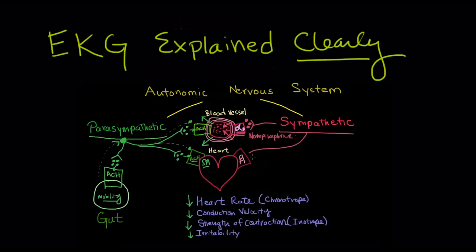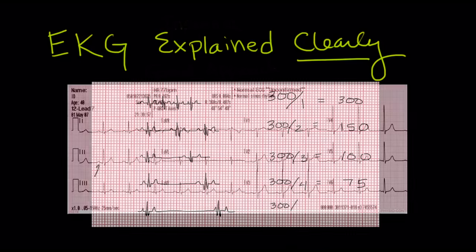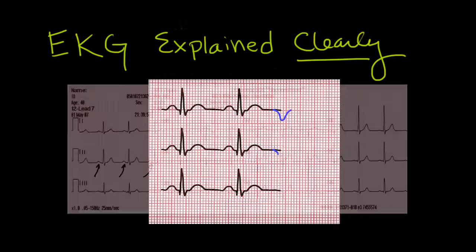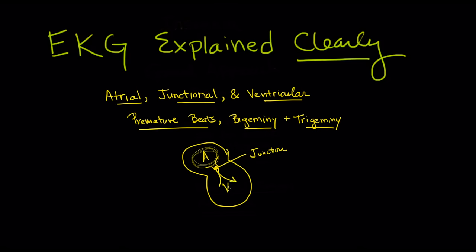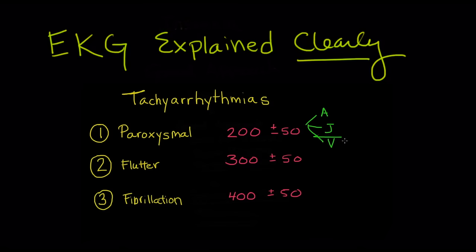We'll cover the impact of our nervous system and neurotransmitters on the heart, then on to rate, rhythm, axis, escape rhythms, PVC, bigeminy, tachyarrhythmias, and ventricular tachycardia.